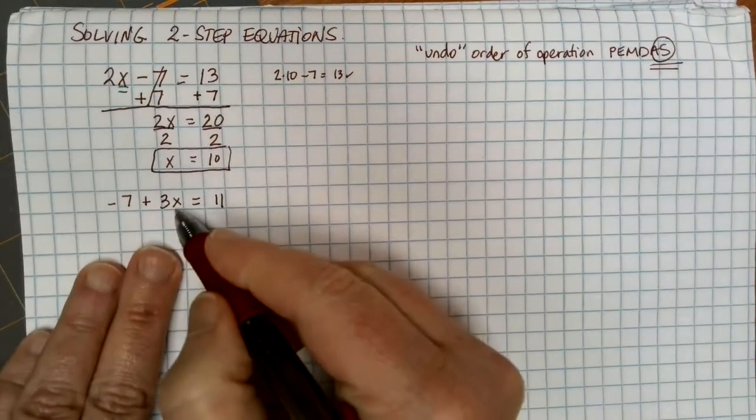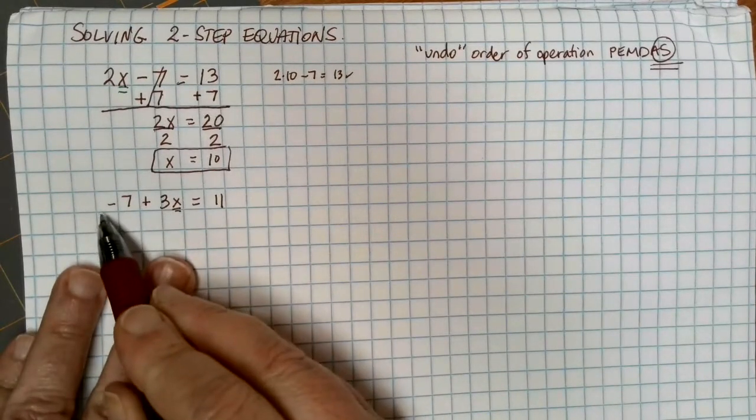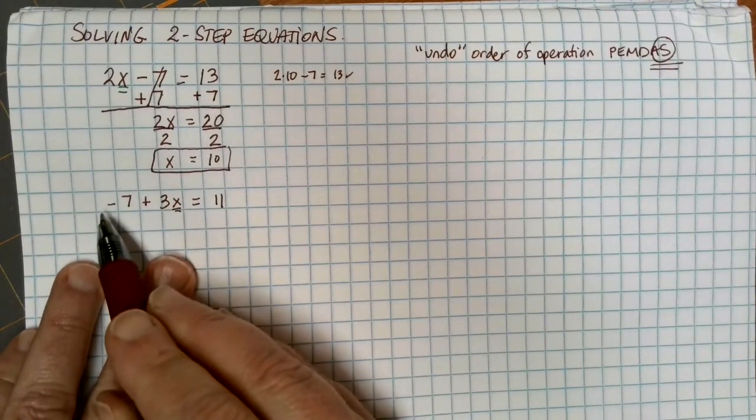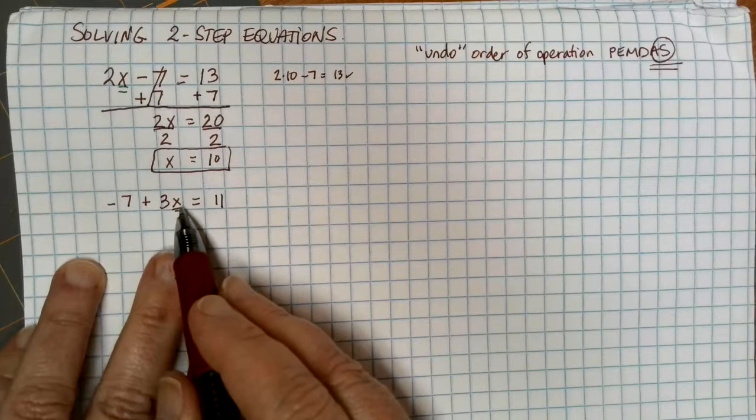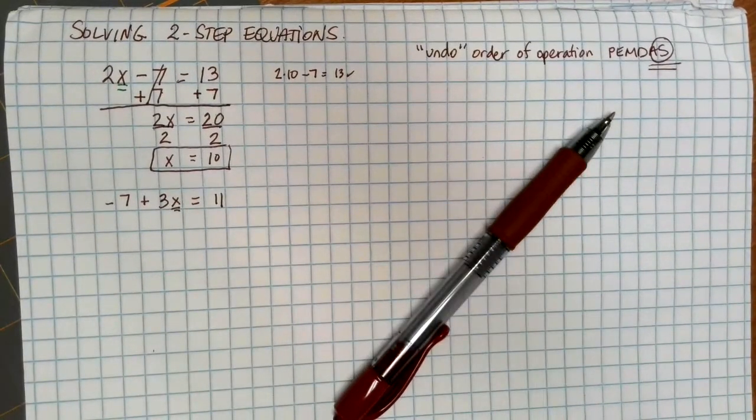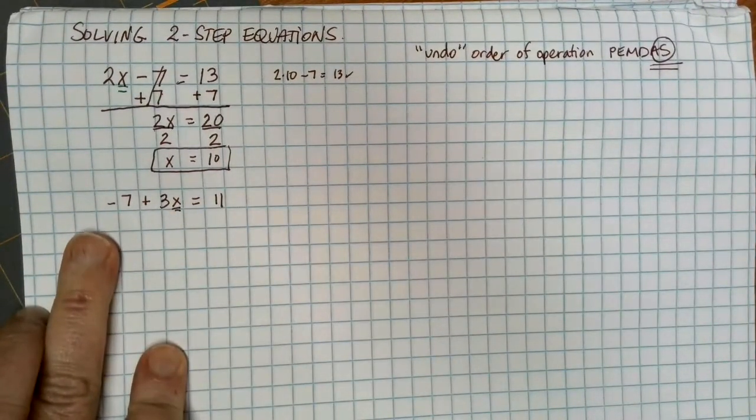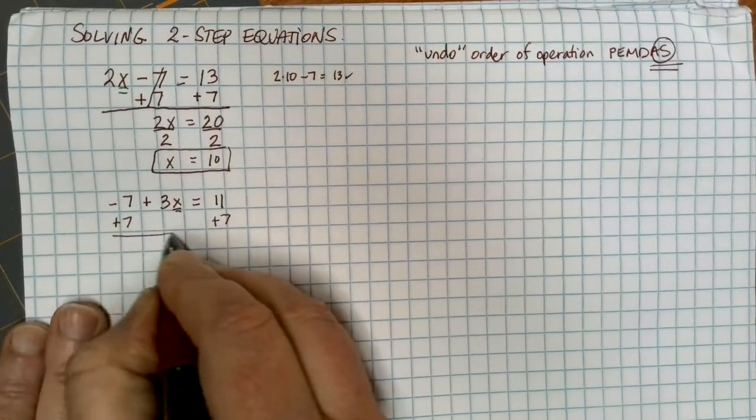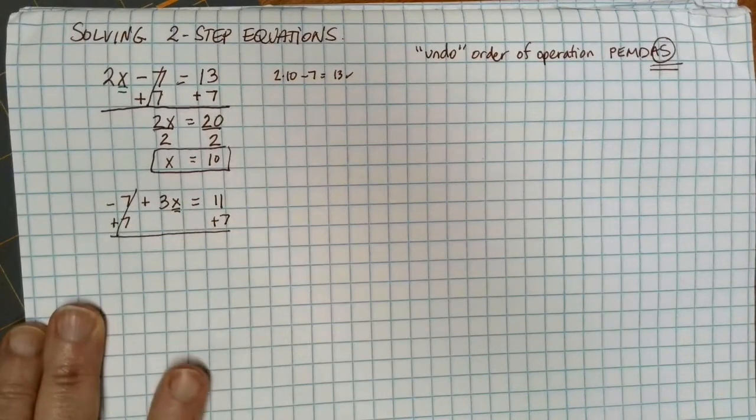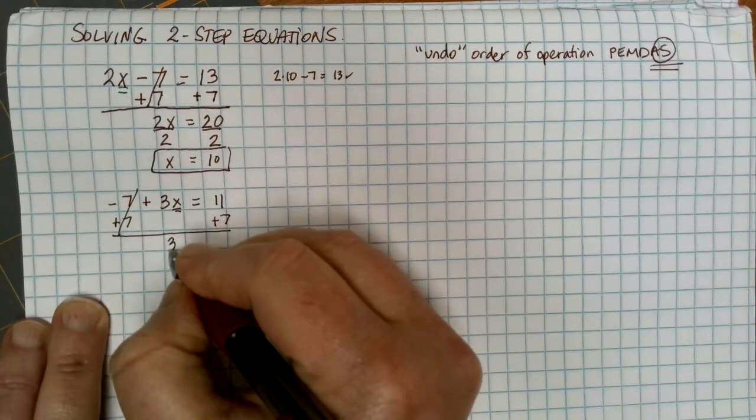In this case, I still want to get the x alone right here. There's a 3 being multiplied and a negative 7 that's being added. So we always get rid of the weakest link first. It's usually actually the thing farthest physically away. The 3 is touching the x, so that sticks around the longest. The negative 7 here is farther away, so I'm going to get rid of that first. The negative 7 is being added, so to move it and get rid of it, I'm going to add 7 to each side. Negative 7 plus 7 is 0. That's what I need to make that go away. And then here I'm left with just the 3x.